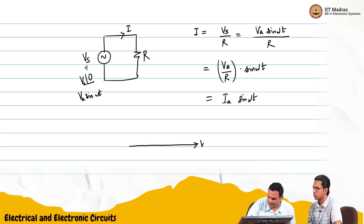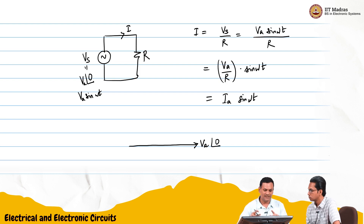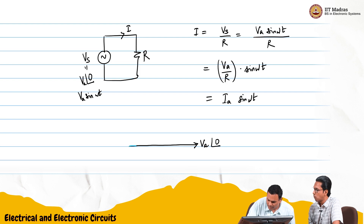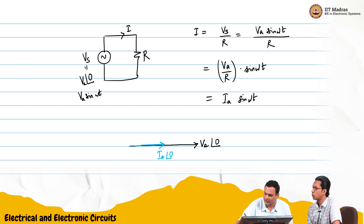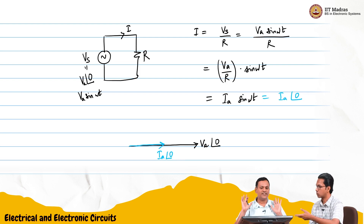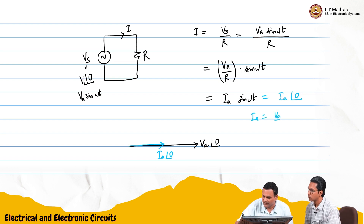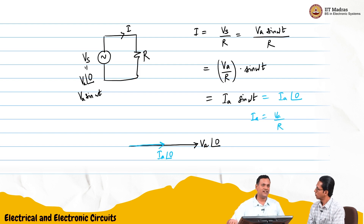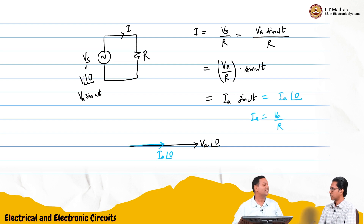If the voltage is V_a∠0 — that is the reference — then the current will be in phase. This will be I_a∠0, where I_a = V_a / R. The phasor is rotating at angular velocity ω; the current phasor is also rotating at the same angular velocity ω and is exactly in phase with the voltage. Only the magnitudes are different.